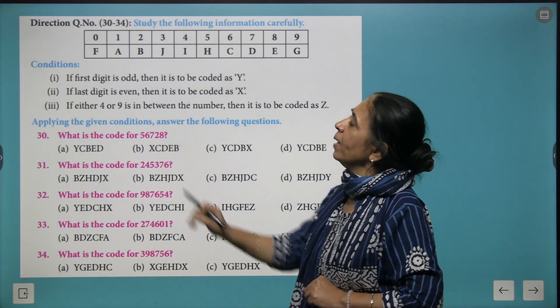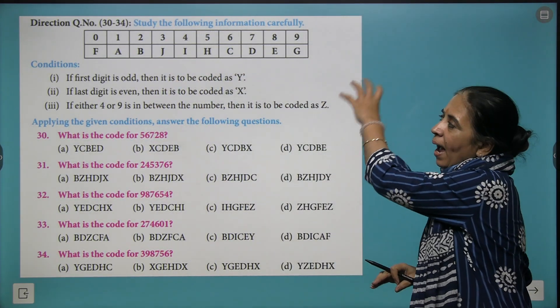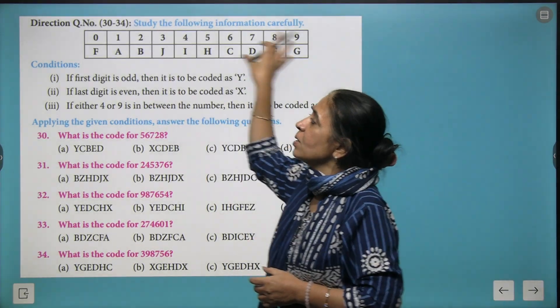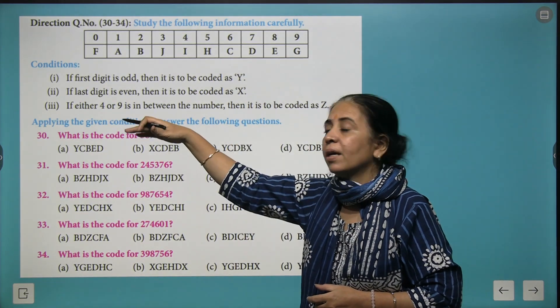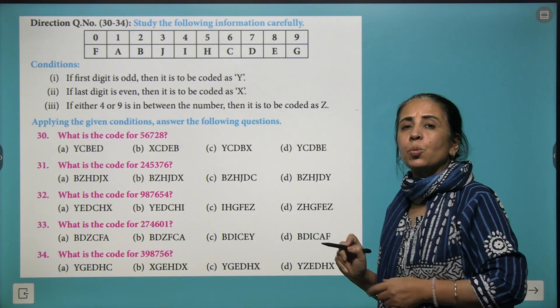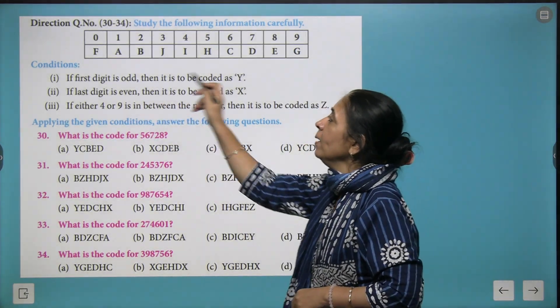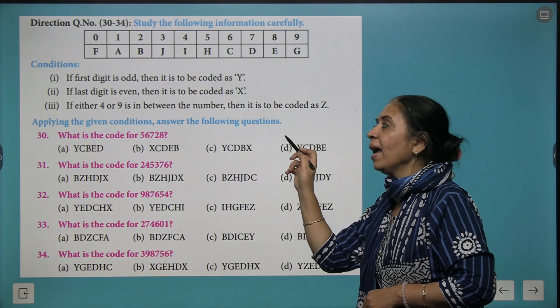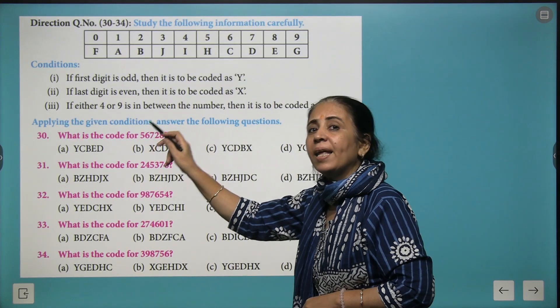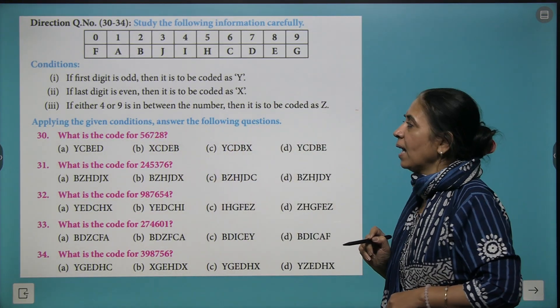Over here we are provided with information along with some instructions: if the first digit is odd, then it is to be coded as Y. If the last digit is even, then it is to be coded as X. And if either 4 or 9 is in between the number, then we have to code it as Z.